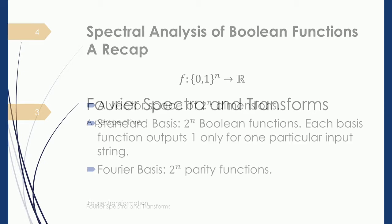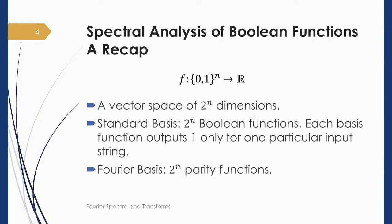We will begin with Boolean functions. A Boolean function takes as input n bits and returns typically a real-valued number. Such a function can be used to model a variety of computations — many real-world inputs like graphs and numbers can be encoded as a binary string, and the Boolean function refers to an n-bit encoding of the input with a suitable computed value.